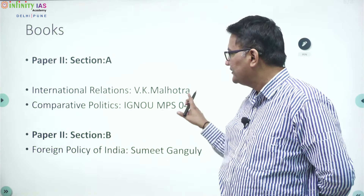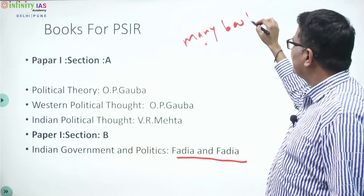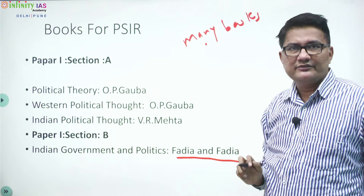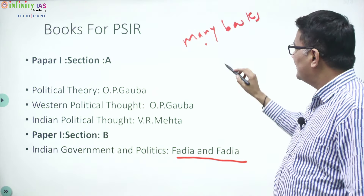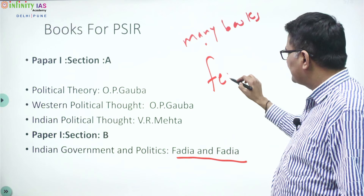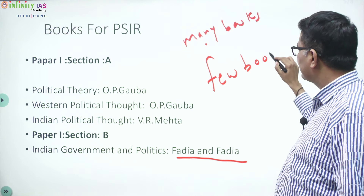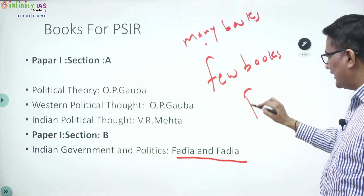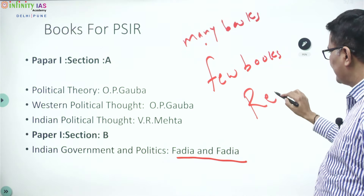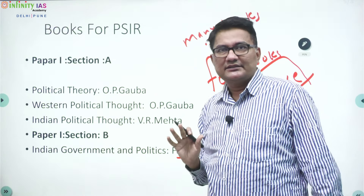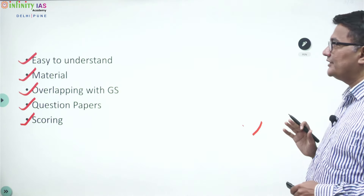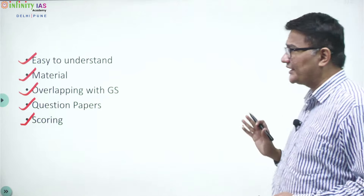There are students who feel these books are sufficient, and mostly they are. The problem is that students go for many books and read them fewer times. Instead, read a few good books many times, revise them, and practice answer writing. This will give you enough edge in political science.